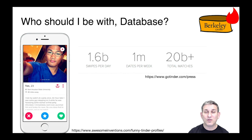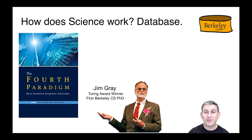One million dates happen per week and 20 billion-plus total matches were made with Tinder — this data has a really profound effect on our world. On a more serious note, science increasingly is being done through databases. The photo here is of Jim Gray, a Turing Award winner and the first person to get a computer science PhD at UC Berkeley, so we're very proud of him.